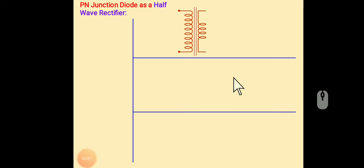Hello everyone, today we will discuss about rectifier. Rectifier is a device which converts alternating current into direct current.